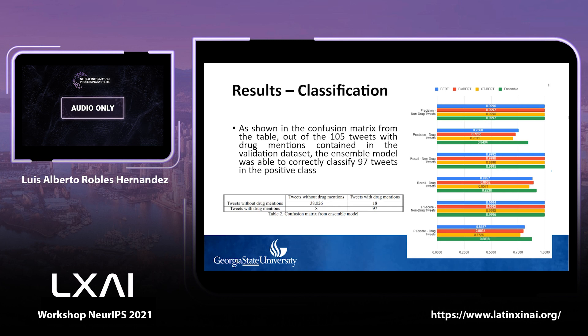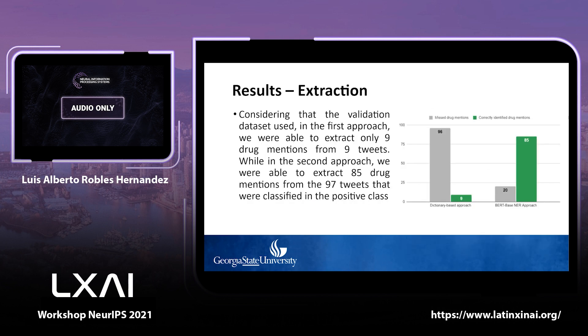In the results for the classification process, the ensemble model achieved an F1 score of 0.88, surpassing the results from the individual models. From the confusion matrix, out of 105 tweets in the validation dataset, the ensemble model correctly classified 97 tweets in the positive class. For the extraction process, the first dictionary-based approach extracted only 9 drug mentions from 9 tweets, while the second NER-based approach extracted 85 drug mentions from those 97 positively classified tweets.